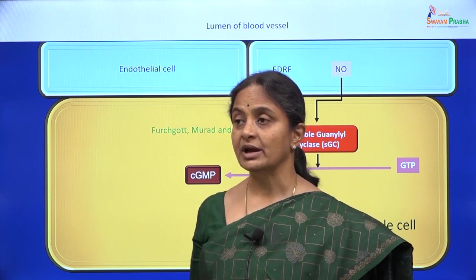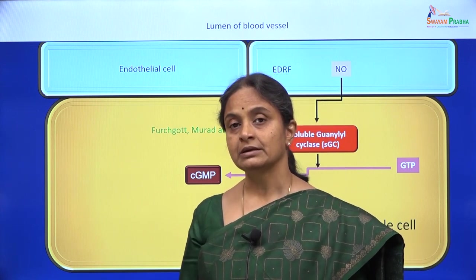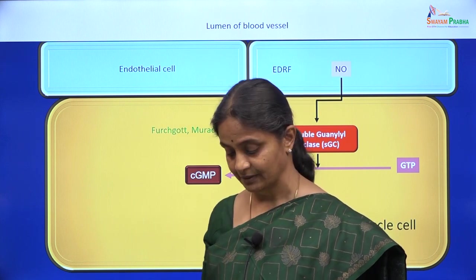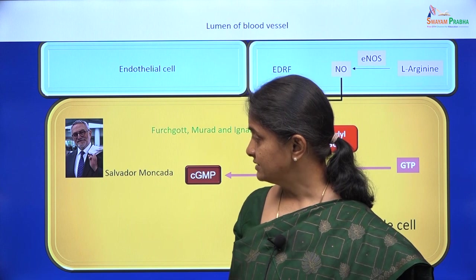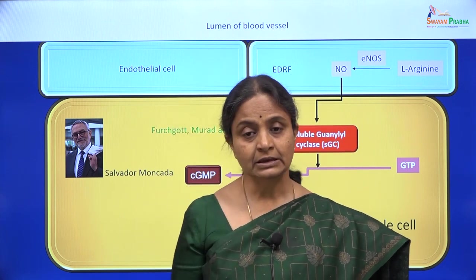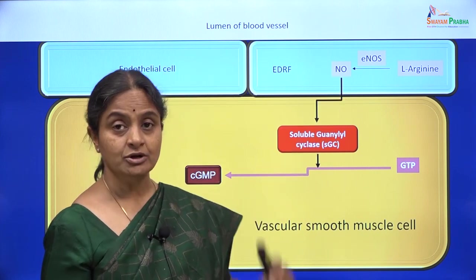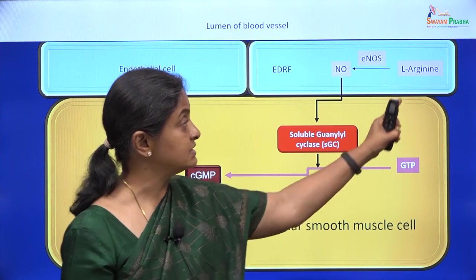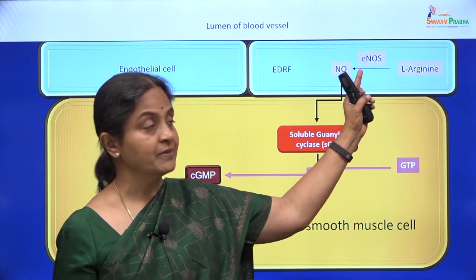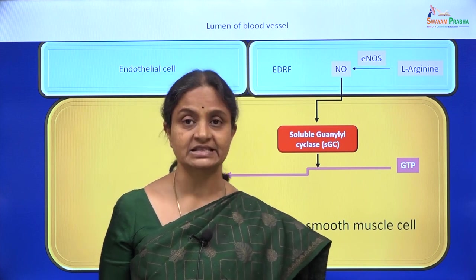Another person who had done extensive work on these pathways but was not named in the Nobel Prize — because Nobel Prizes are not given to more than three people — is Professor Salvada Moncada. The source of nitric oxide in the endothelial cell is L-arginine, and L-arginine is acted upon by the enzyme endothelial nitric oxide synthase to elaborate nitric oxide within the cell.